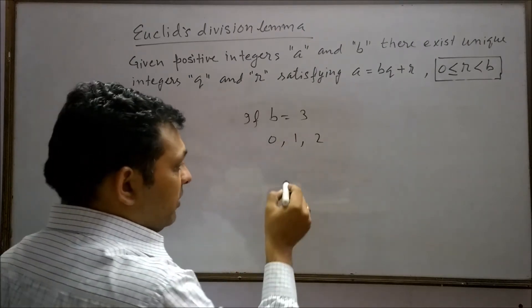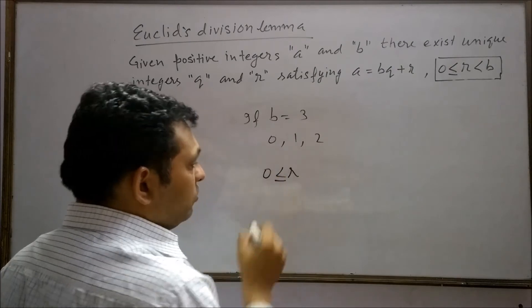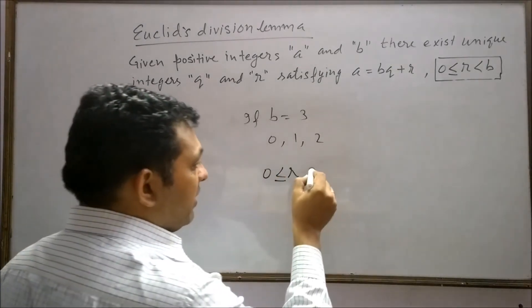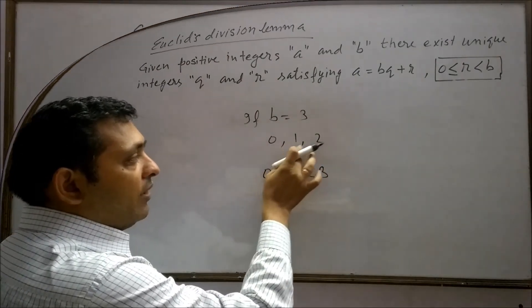These positive integers can be represented as r equals 0 or greater than 0 but less than 3. So it means only three possible remainders come out: 0, 1 and 2.